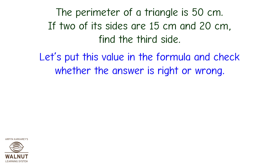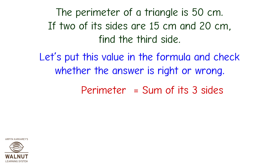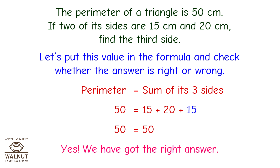Let's put this value in the formula and check whether the answer is right or wrong. Perimeter is equal to sum of its 3 sides. 50 is equal to 15 plus 20 plus 15. So 50 is equal to 50. Yes, we have got the right answer.